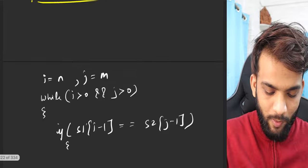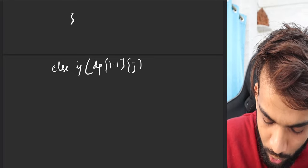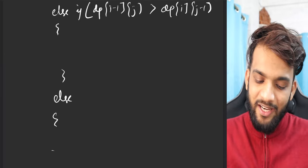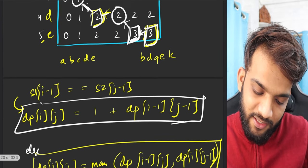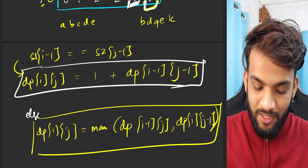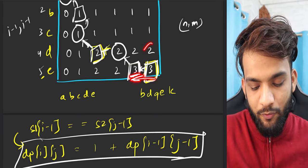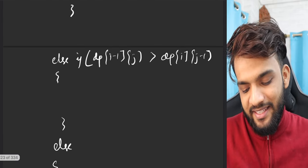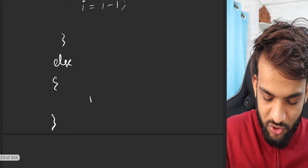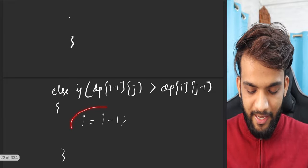So in the else branch: if dp[i-1][j] is greater than dp[i][j-1], move toward the previous row — that is, decrement i. Otherwise, decrement j (move to the previous column). Whoever is the max is where you move — if dp[i-1][j] is greater move i--, else move j--. This is how you navigate the pointer in the non-matching case.